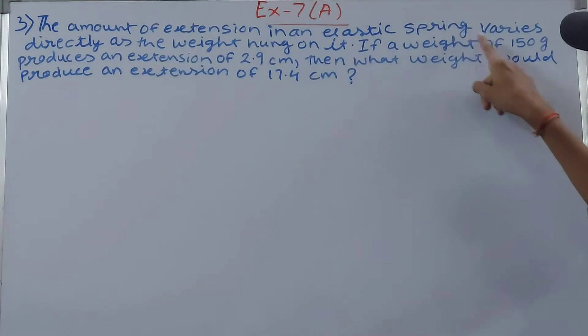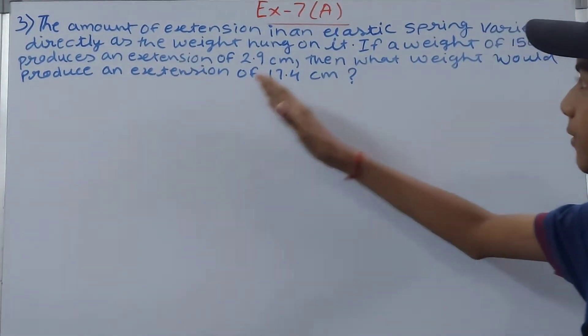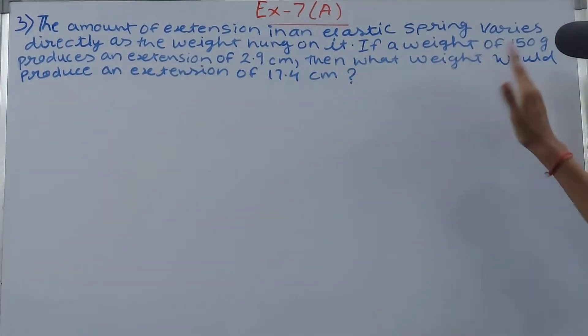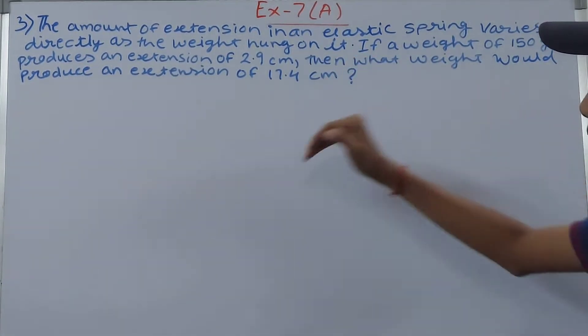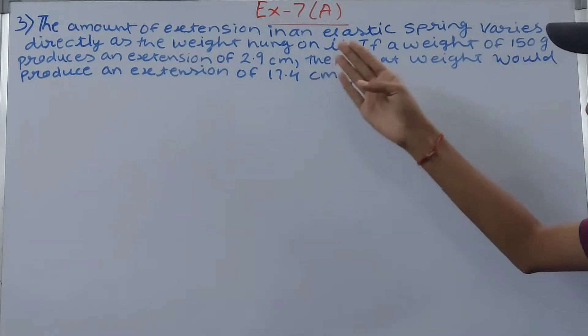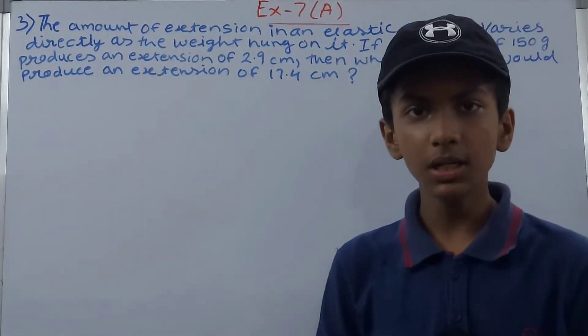The amount of extension in an elastic spring varies directly as the weight hung on it. If a weight of 150 grams produces an extension of 2.9 centimeters, then what weight would produce an extension of 17.4 centimeters?